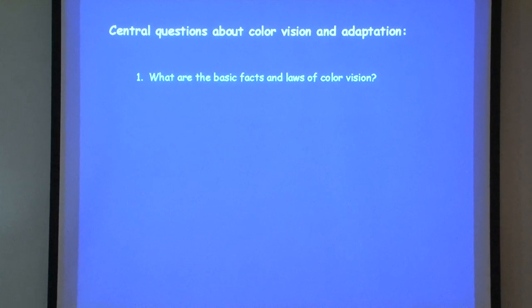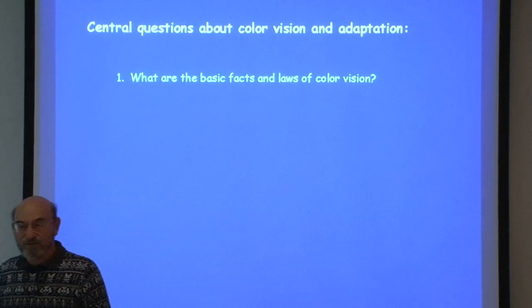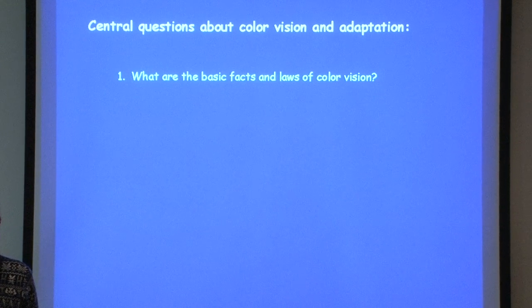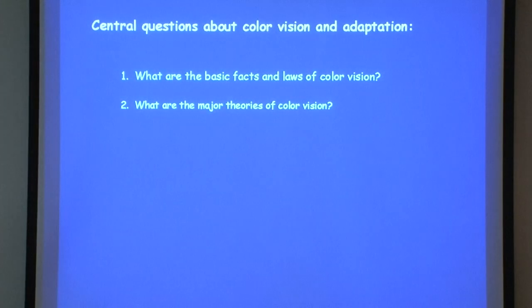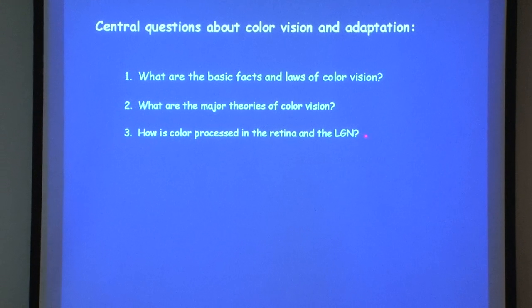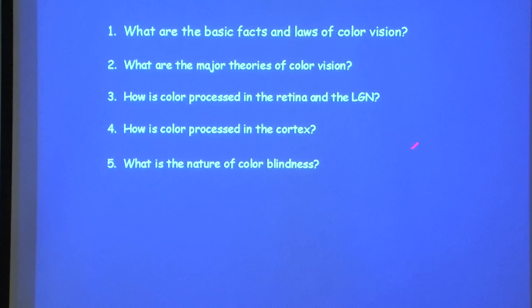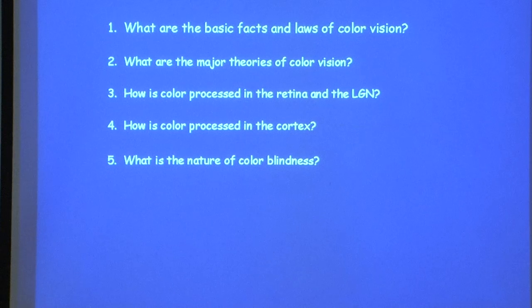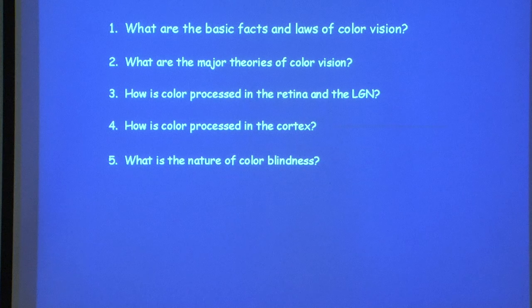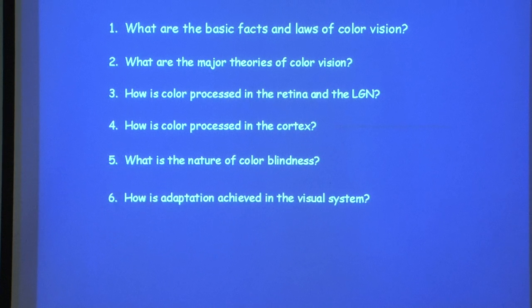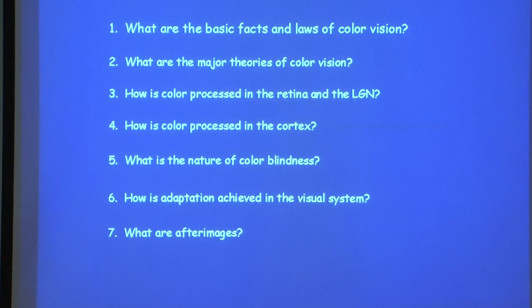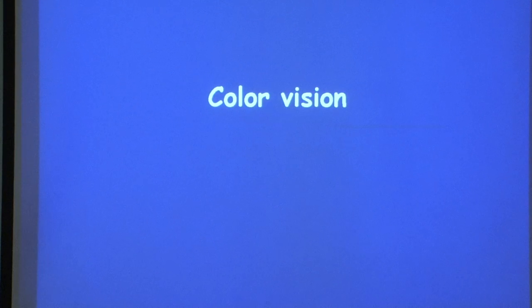Let me first give you a list of things we are going to discuss. First, what are the basic facts and laws of color vision? Second, what are the major theories of color vision? Then we'll examine how color is processed in the retina and geniculate, and what happens in the cortex. We'll discuss color blindness, which is not uncommon among humans, and then how adaptation is achieved and what after images are.